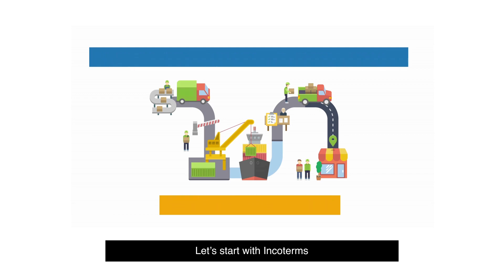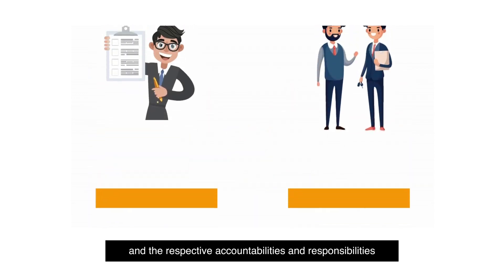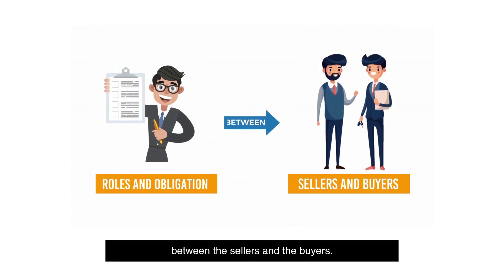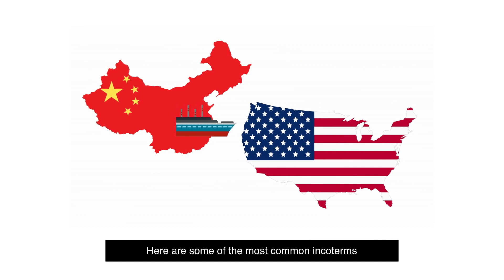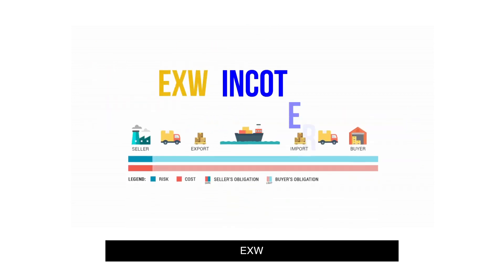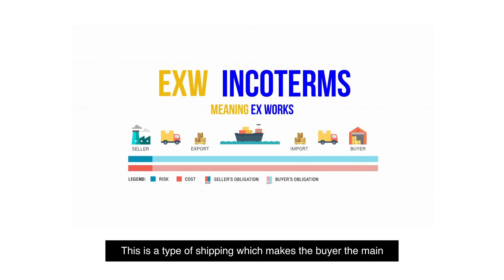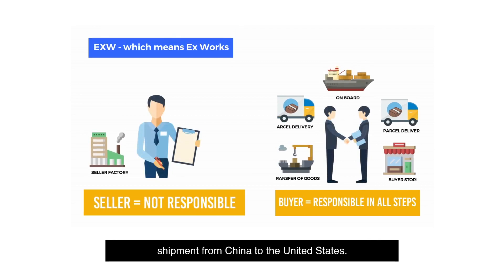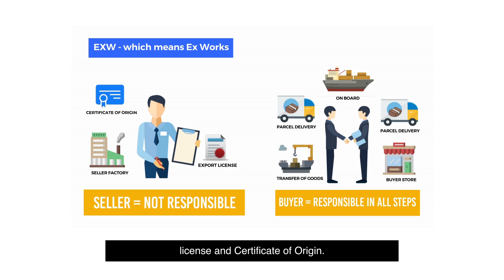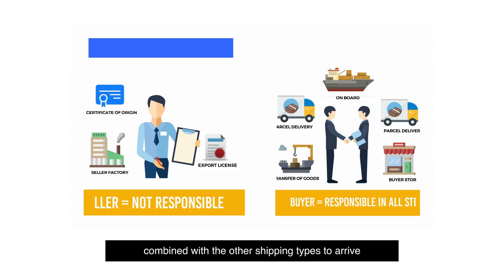Let's start with Incoterms. Incoterms are a set of rules that define the roles and the respective accountabilities and responsibilities between the sellers and the buyers. These rules are used primarily by people who are involved in the shipping process from China to the U.S. Here are some of the most common Incoterms used not only by international traders, but anyone involved in the process. EXW, which means Ex-Works. This is a type of shipping which makes the buyer the main responsible for arranging every step of the goods shipment from China to the U.S. The only part of the seller is to secure an export license and certificate of origin. However, this is rarely used alone, since it's usually combined with other shipping types to arrive at a fair agreement.